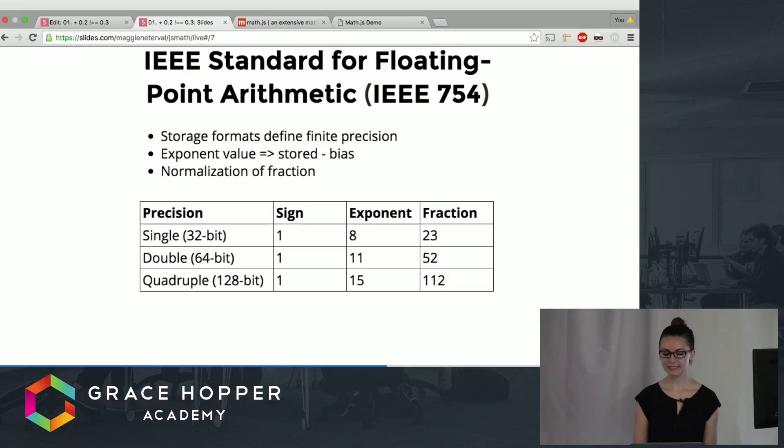So there are several different precision levels that you can specify numbers to be stored at. There is single which takes up 32 bits in which the sign will take up one bit, positive or negative, the exponent will take up 8 bits and then the fraction which is the mantissa minus the radix point will take up 23.